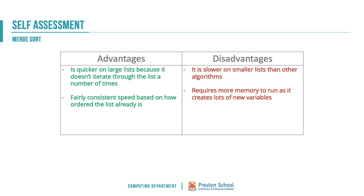A merge sort is quicker on large lists because it doesn't need to loop through over and over again - the sorting process happens in one structured pass. It's also fairly consistent in terms of speed; a nearly sorted list and a totally randomly ordered list would take similar time, so we can predict how long sorting will take. The disadvantage is it's slower on smaller lists than some other algorithms, and it requires quite a lot of memory because it creates many new variables.